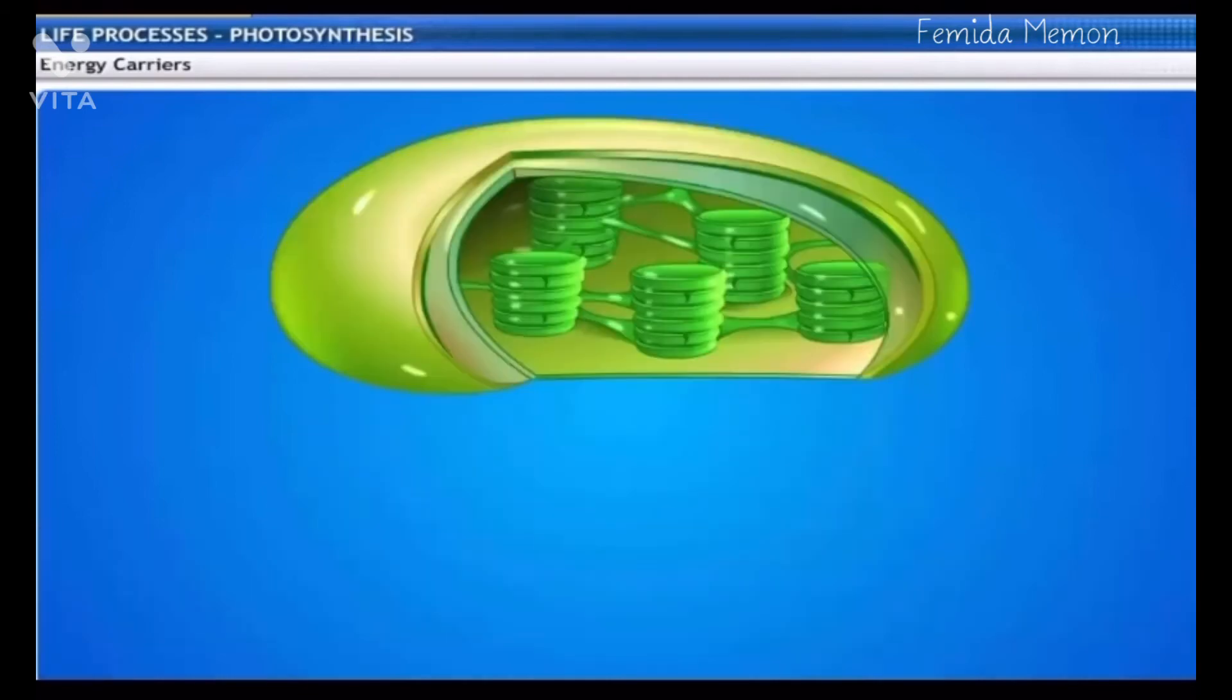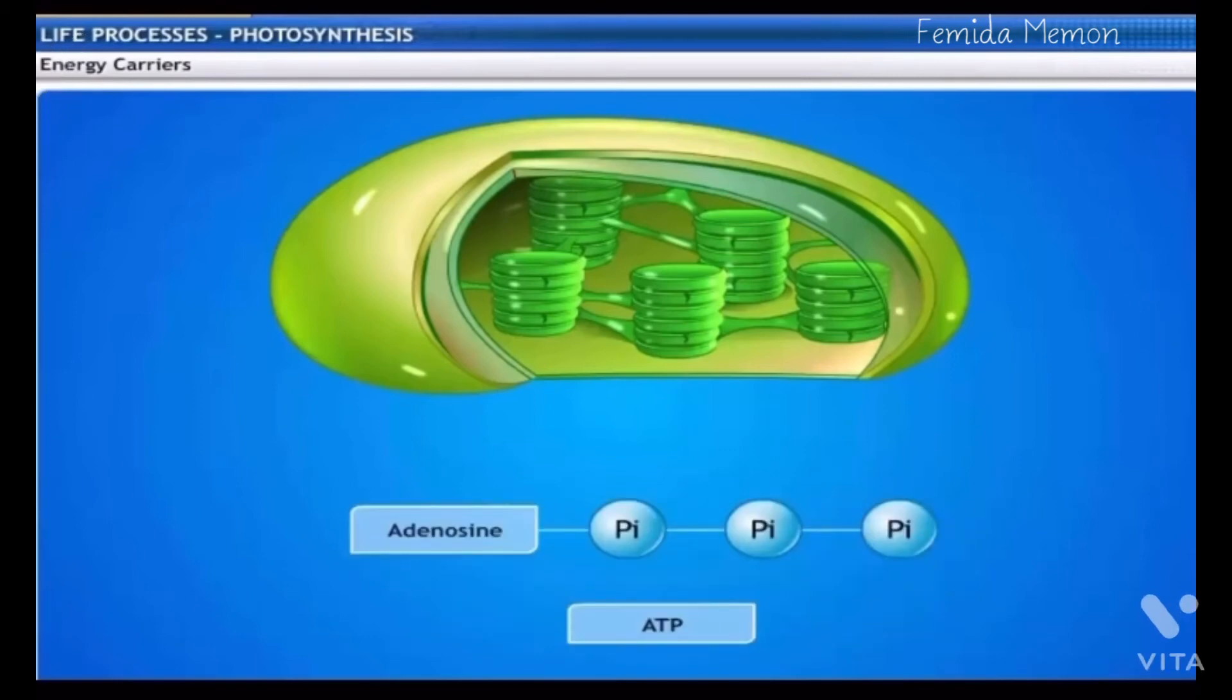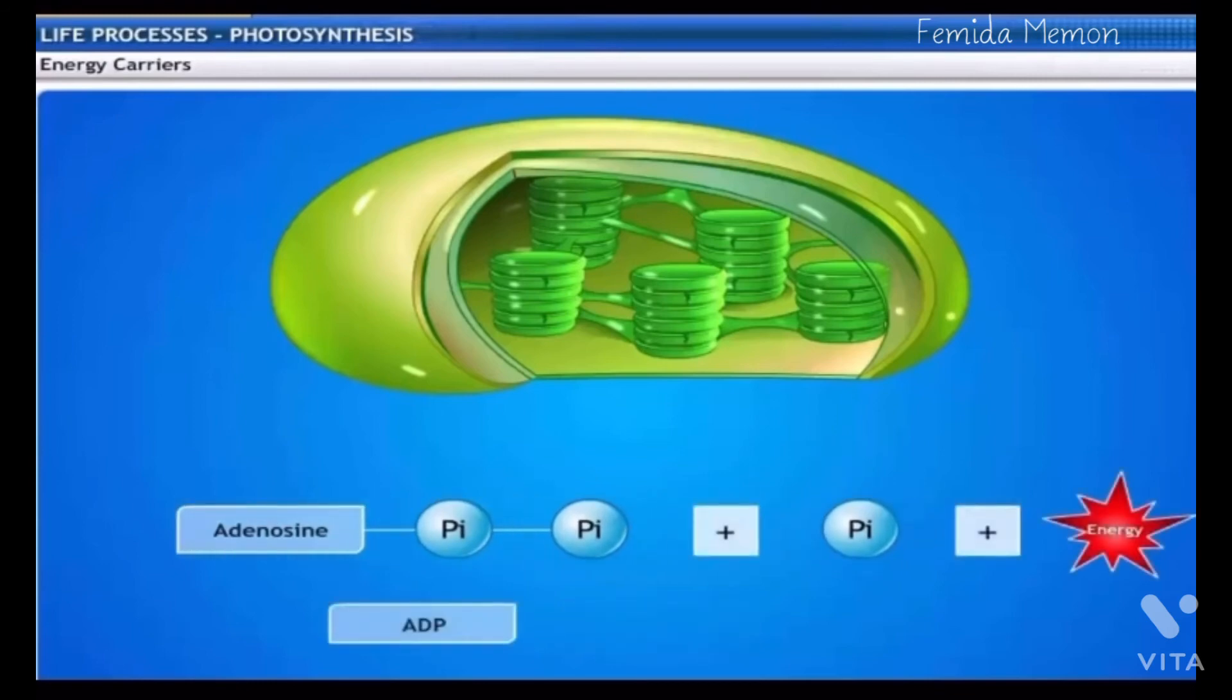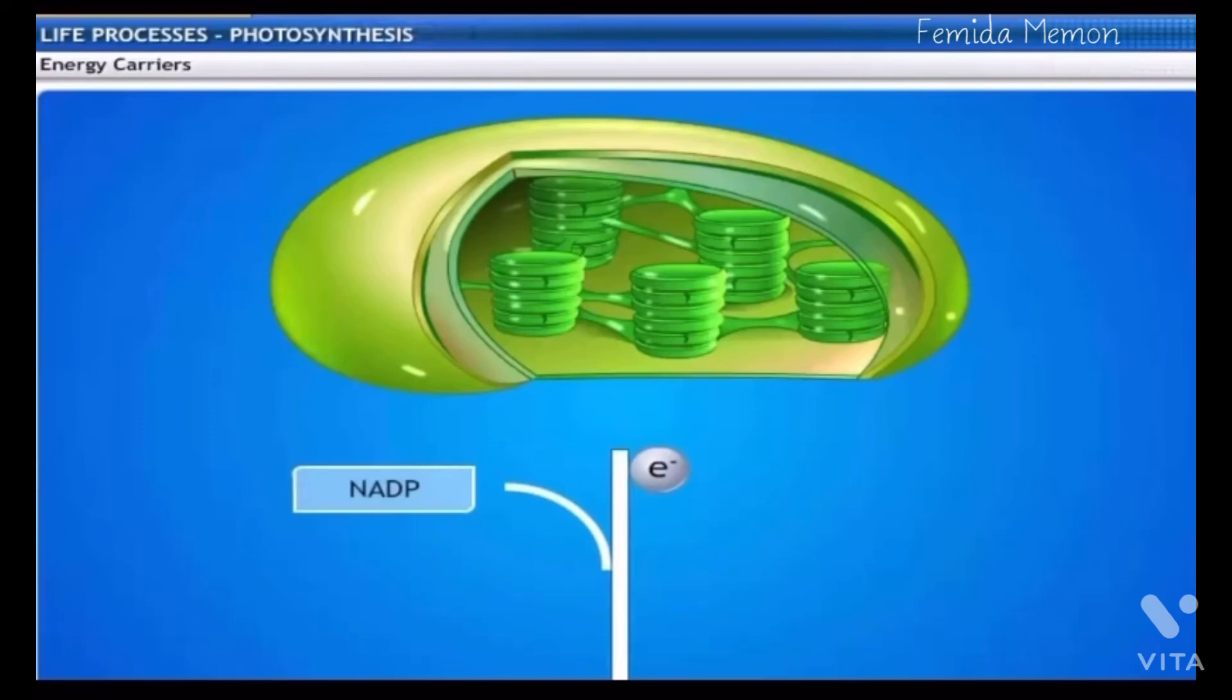The energy carriers involved in photosynthesis are ATP, adenosine triphosphate, which acts as an energy carrier. The third phosphate group in ATP breaks up, releasing ADP and phosphate energy. NADP is nicotinamide adenine dinucleotide phosphate, which is used as an electron carrier.